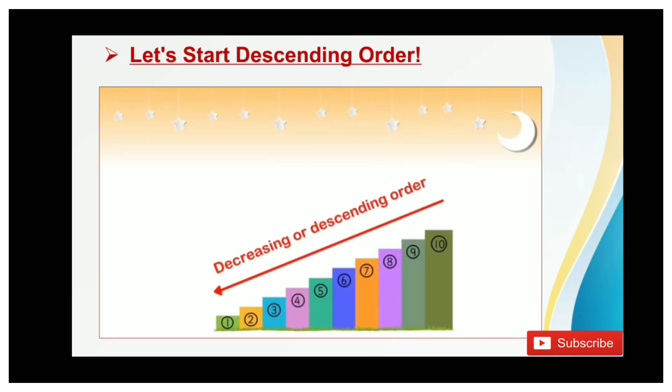So students, now let's start descending order. Now do you know what is descending order? Descending order is when numbers are arranged from large numbers to smallest. Here as you can see, numbers are decreasing step by step.